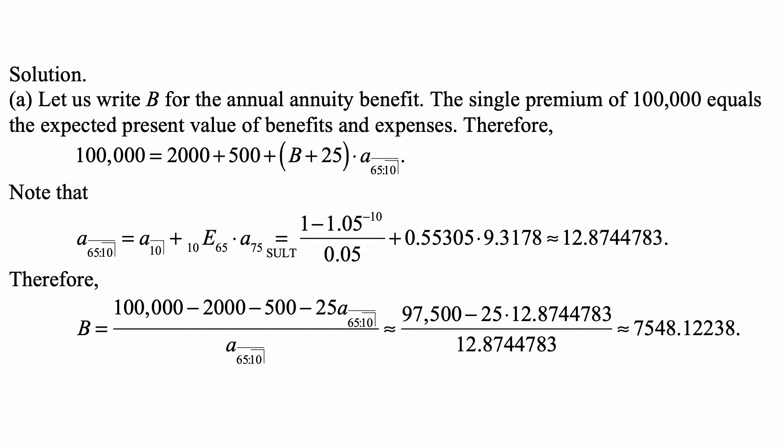Therefore, 100,000 equals 2,000 + 500 + (B + 25) × a̅65:⌉̅10. This annuity factor means the payment is made until the last of them ends, so effectively the payments are certain for 10 years and then if 65 is still alive they continue until that now 65 year old dies.